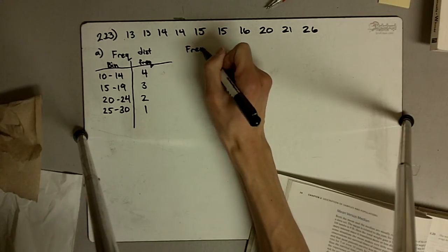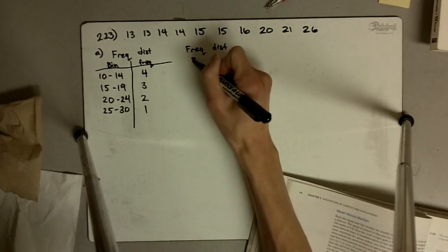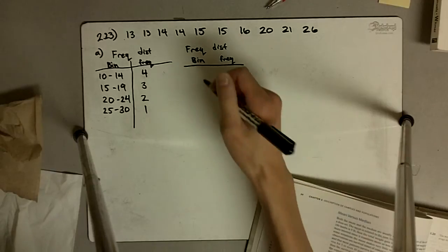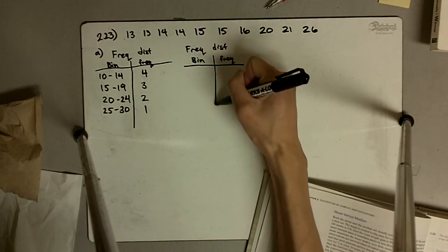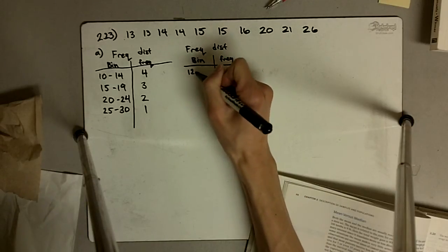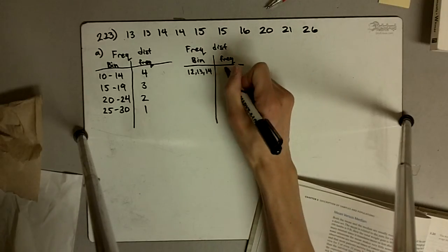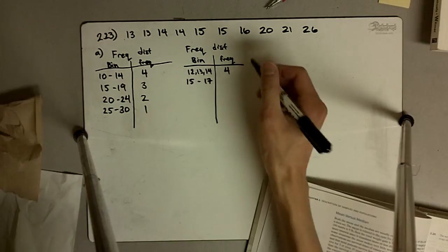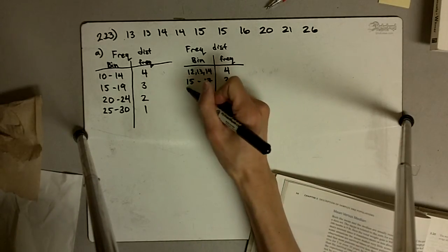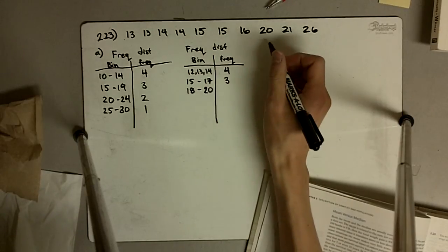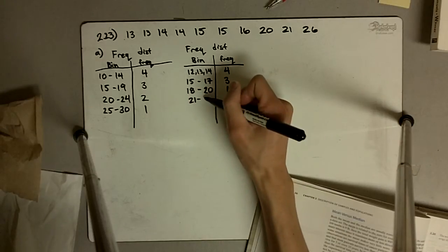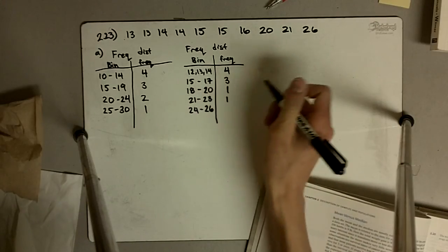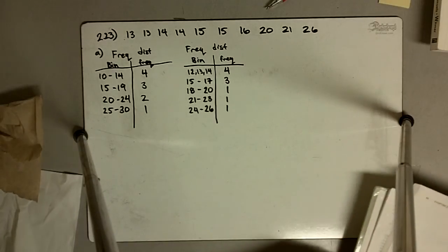For the second frequency distribution, I'll make the bins smaller — bins of size 3. Starting from 12 to 14, there are three numbers in this bin. Then 12 to 14 actually contains four numbers. 15 through 17 contains three numbers. 18 to 20 contains one number. 21 to 23 contains one number. And 24 to 26 contains one number. So there we have two frequency distributions.